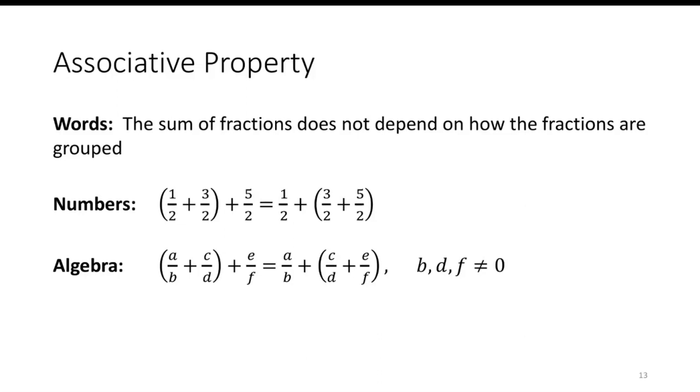The associative property is that when you're adding three or more fractions together, or three or more numbers together, it doesn't matter which pair of numbers you add first. So in the example you see, I put 1/2 + 3/2 could be added first, and then add 5/2. Or I can add the 3/2 and 5/2 first, and then add it to 1/2. Doesn't matter which pair you add first.